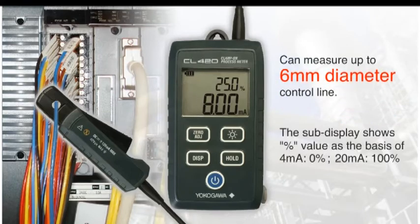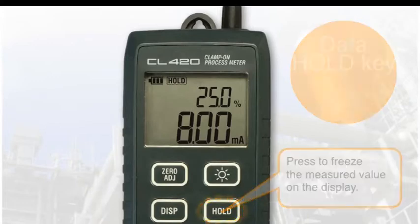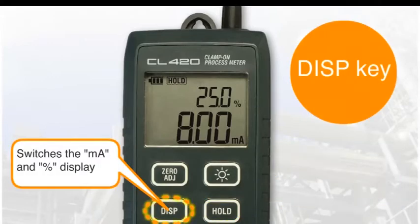The multi-function display allows the user to read milliamp measurements in either milliamp or percent. If you need to freeze a measurement, simply press the hold key. By pressing the display key, the user can toggle the display between milliamp or percent.